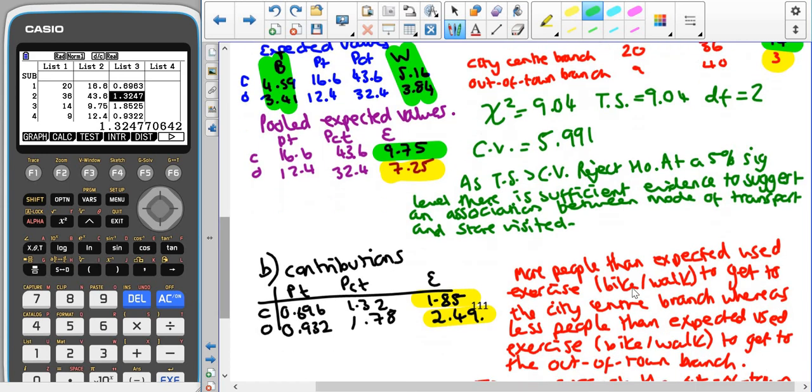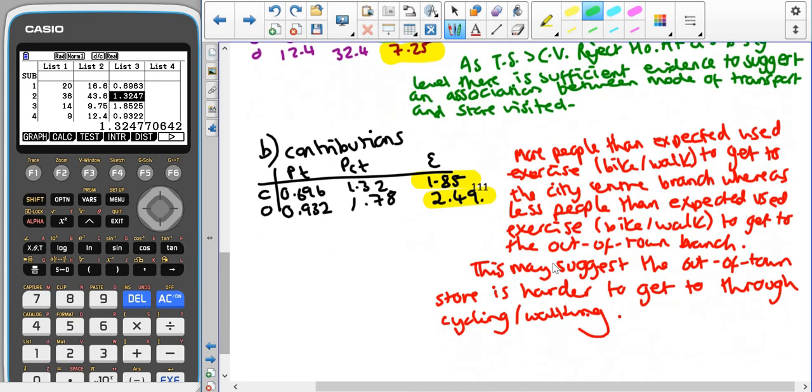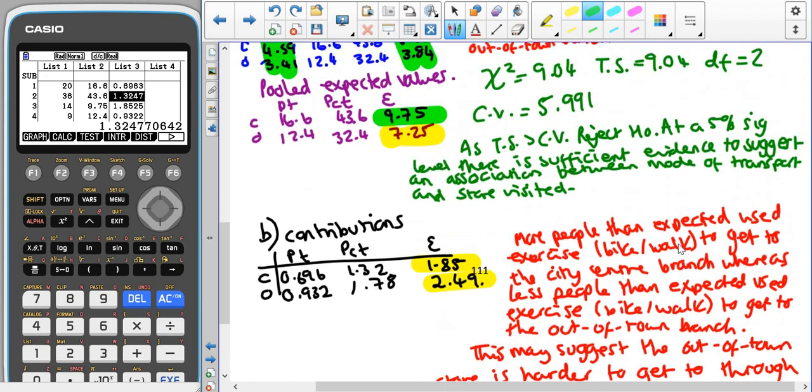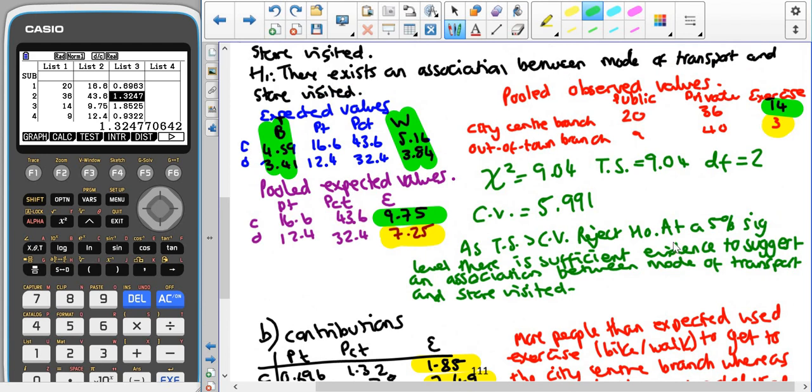So for the 2.49 we expected 7.25 people to use exercise to get to the outer city branch but we only found 3 of them and we expected 9.75 people to use exercise to get to the city centre branch but instead we observed 14. So more people than expected use exercise or bike slash walk to get to the city centre branch whereas less people than expected use exercise bike slash walk to get to the outer city branch so maybe this suggests that our out of town store is harder to get to through cycling or walking. So it's very important because they can like to mash these two together you can see again you need to be clearly labelling each table that you write down so that when you're referring back you know which ones to look at.